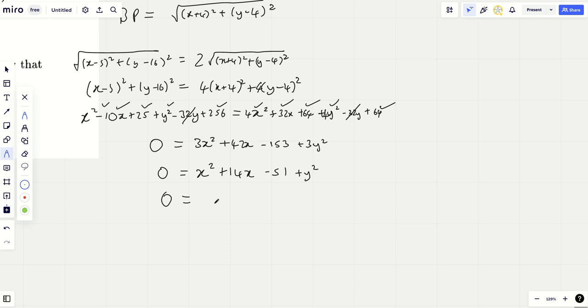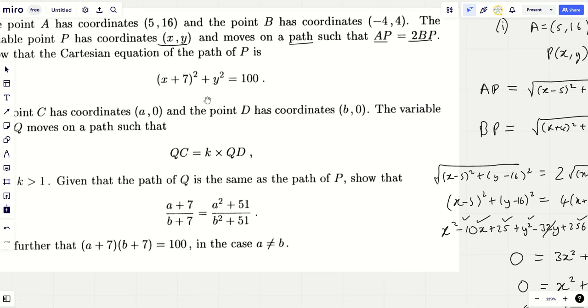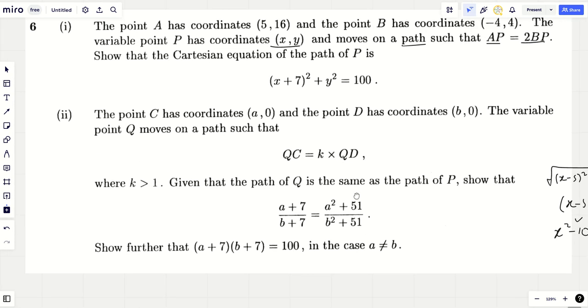We've got 128 on this side, take away 256, you'd have minus 128, take away another 25, you'd have minus 153. Plus 3y². Divide it all by 3 and complete the square, because we're turning it into a circle. And so we end up with the result 100 equals (x+7)² plus y². So it's a circle, centre (-7,0), radius 10. There we go. That's the first bit done.